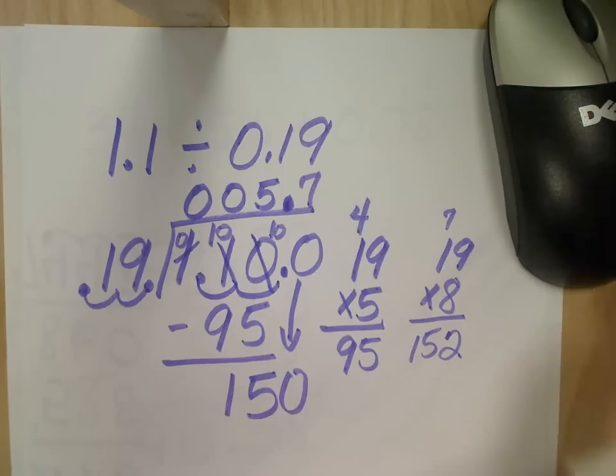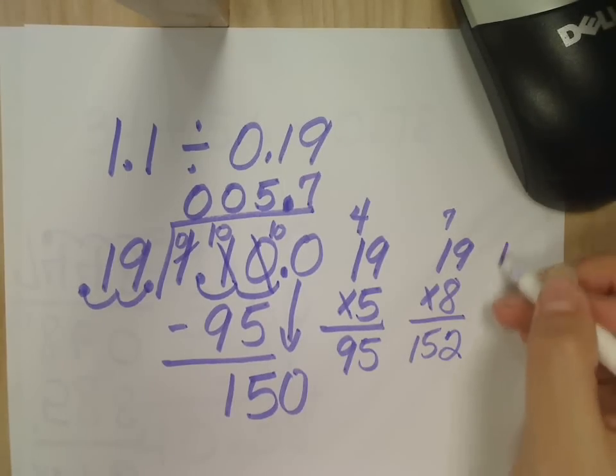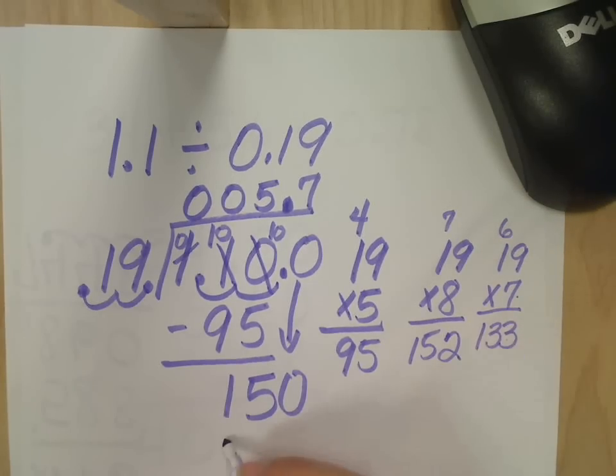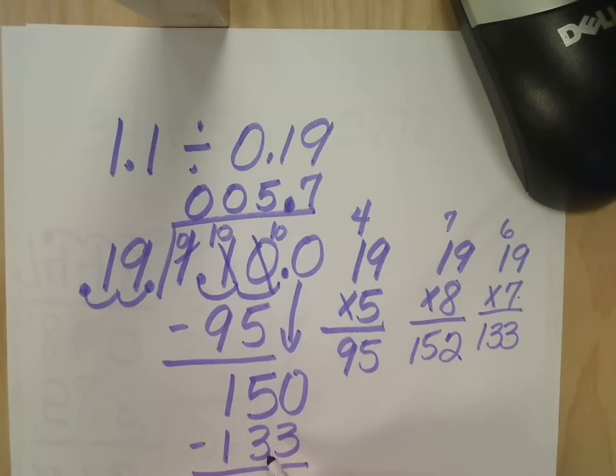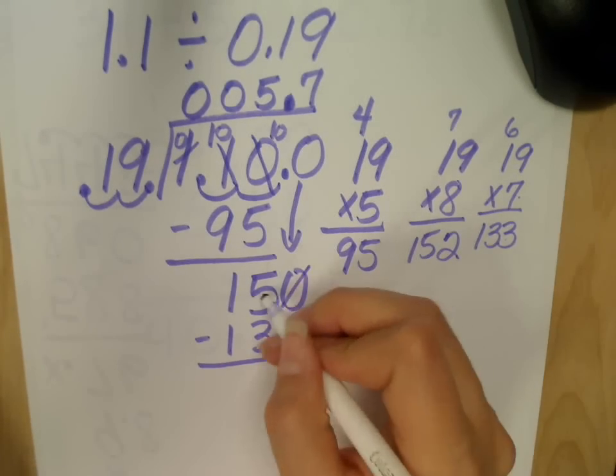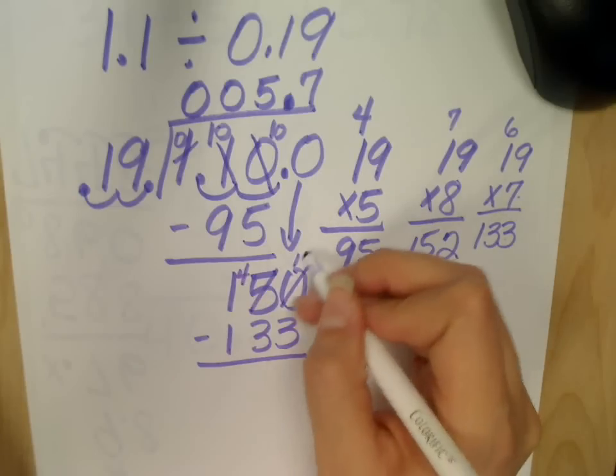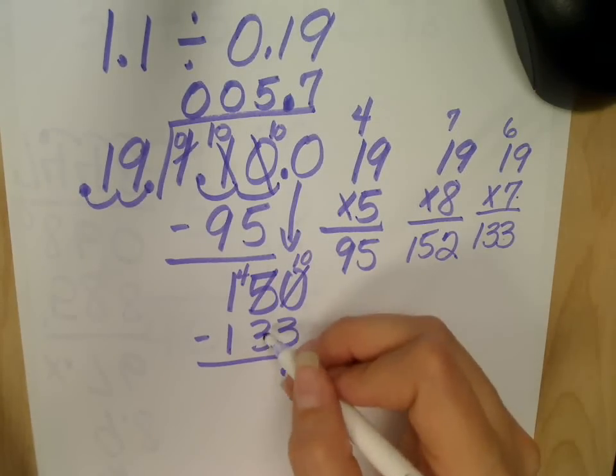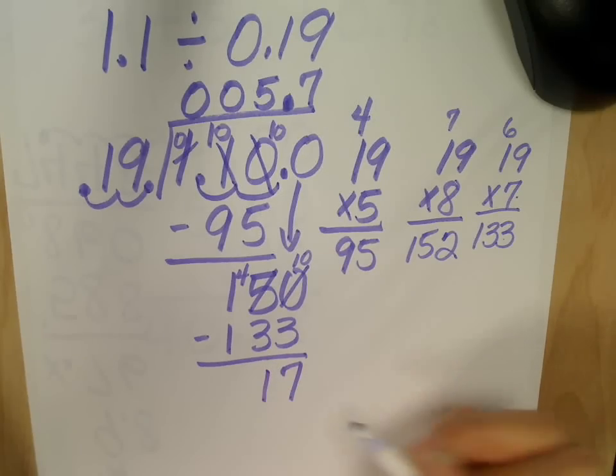Put my answer up there. Nineteen times seven. Seven times nine? Seven times one is seven, plus six? Thirteen. So one thirty-three. And like I said, I guarantee if you line things up nice and neat, it makes it so much easier. So I'm going to borrow from the five to make it a four. That becomes a ten. Ten minus three? Seven. Four minus three? One. So seventeen. But I'm still not done yet. I only have the tenths place here.